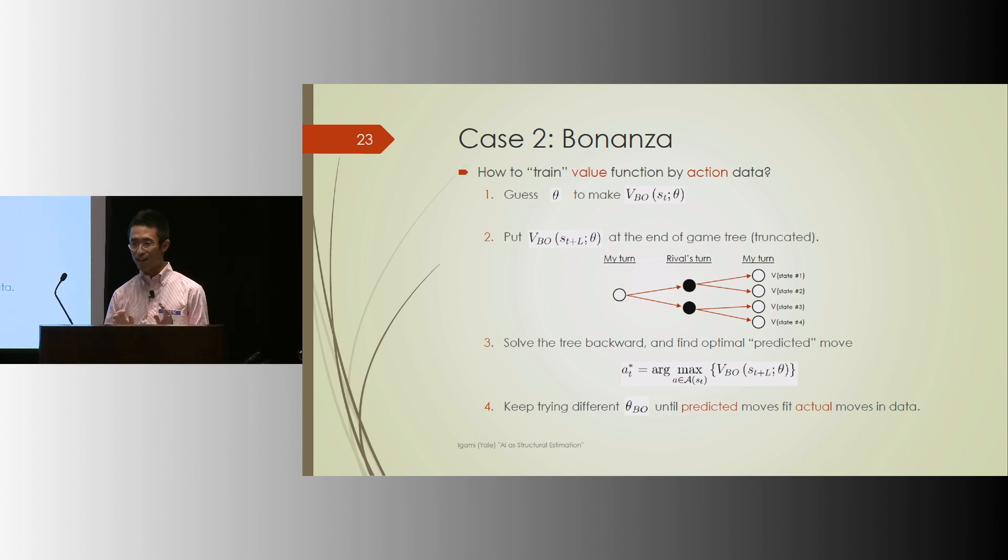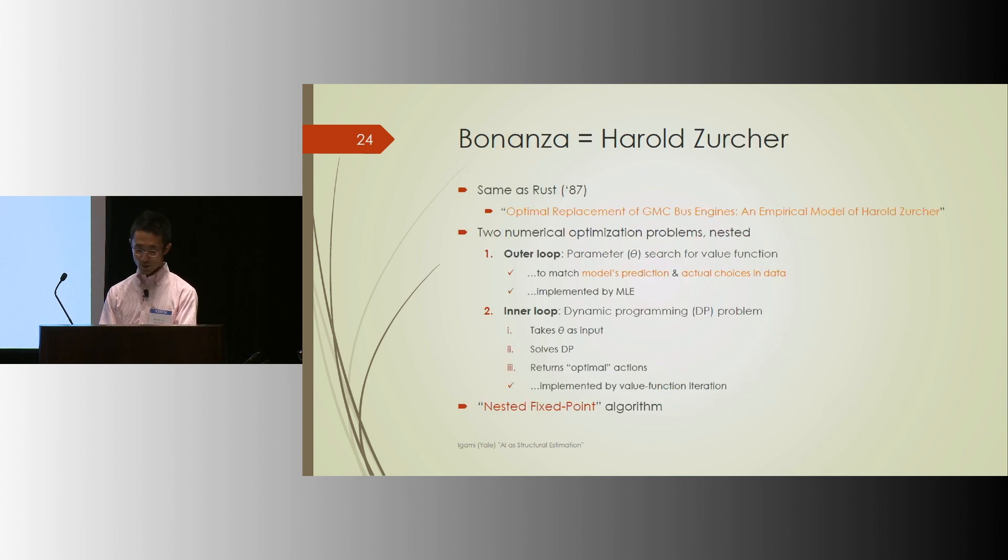So now things start looking more like an IO paper. So I'd say Bonanza is Harold Zucker, if you're familiar with it. It's literally the same algorithm as Rust87, which is this econometrical paper. Rust's method has two optimization routines that are nested. First, the outer loop is to find the parameter values of the value function, or utility function that's underlying it. The nested subroutine takes those parameter values that's given, solves the dynamic programming problem, and turns out the optimal actions. And you repeat this until you find parameter values that would best rationalize the observed actions. Sounds complicated, but it's the usual revealed preferences principle.